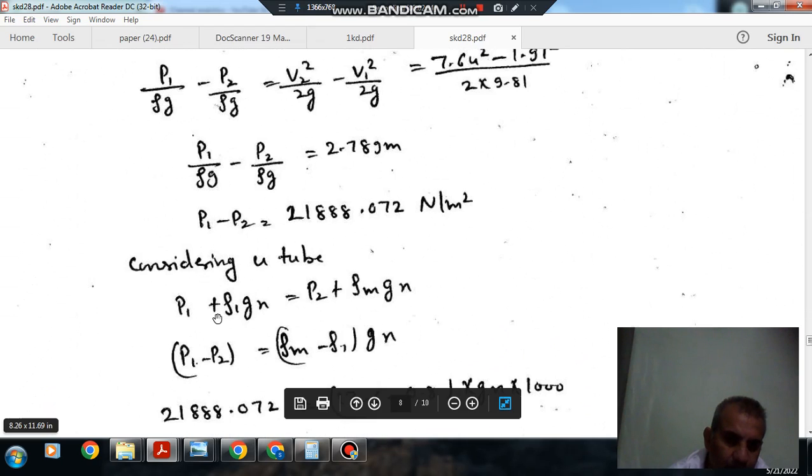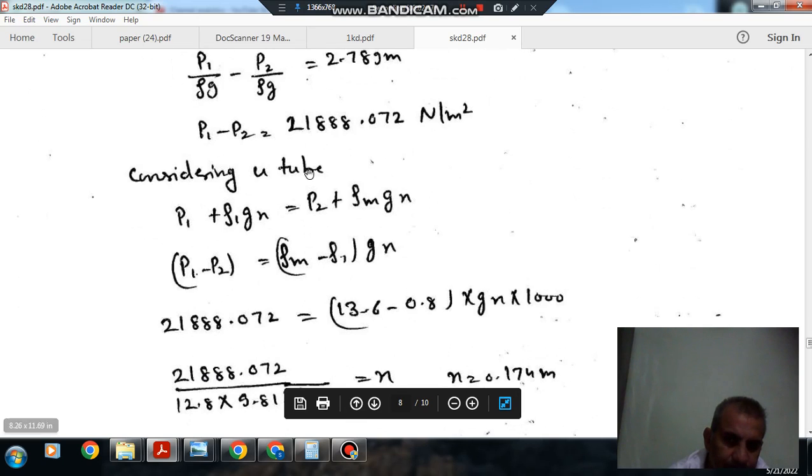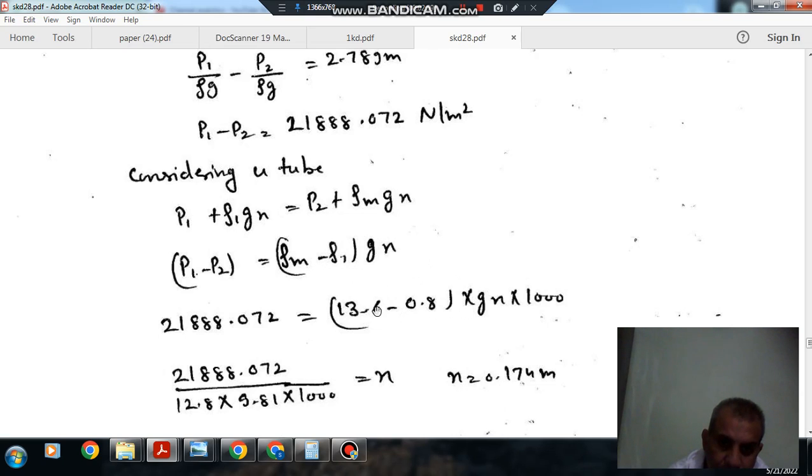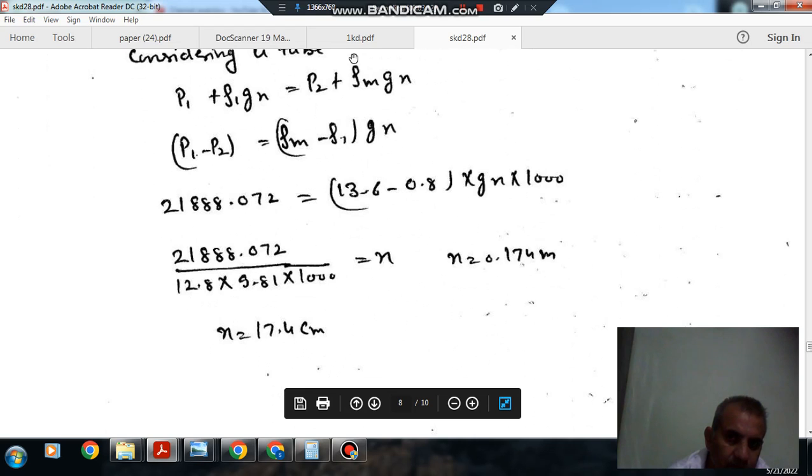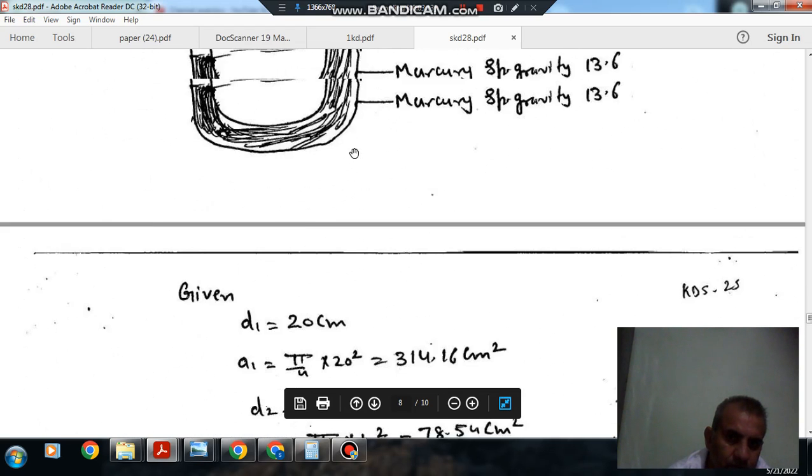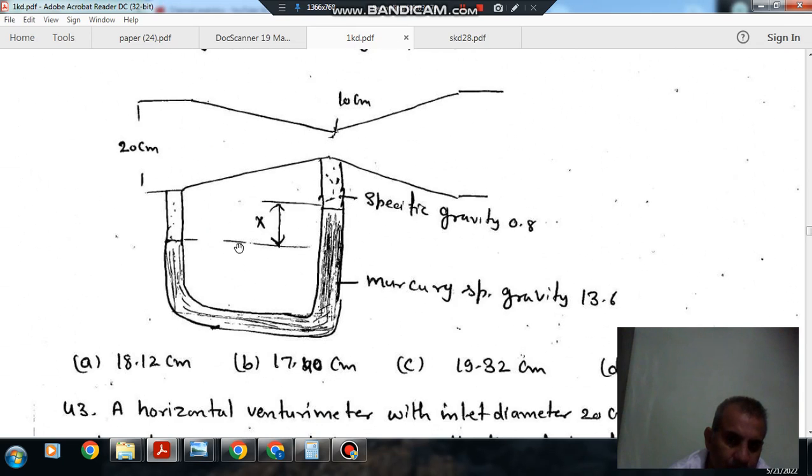We have P1 plus rho gx equals P2 plus rho m gx. So P1 minus P2 equals rho m minus rho 1 times gx. P1 minus P2 is 21888.072, and rho m is 13.6, rho 1 is 0.8. These are specific gravity; if you multiply by 1000 then it becomes rho m and rho 1. From this we get x as 0.174 meter or 17.4 centimeter. The answer is 17.4 centimeter, option B.